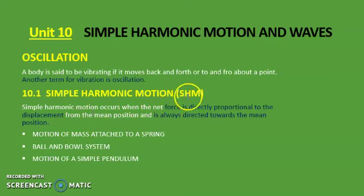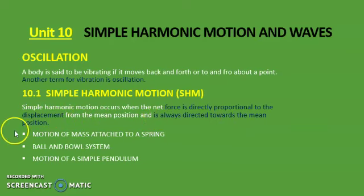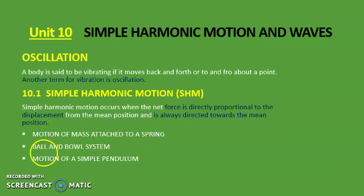After this first condition, you have to keep two things in mind. When a body executes simple harmonic motion, the force will be directly proportional to the displacement — when displacement increases, the force increases; when displacement decreases, the force decreases. And the direction of this force will always be toward the mean position. Here are three examples in this chapter which we are going to prove are executing simple harmonic motion: first is motion of mass attached to a spring, second is the ball and bowl system, and third is motion of a simple pendulum.